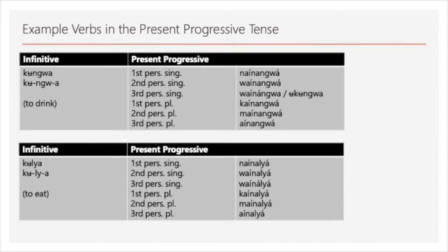What these forms share with the infinitive is the 'n' vowel that is always there, so maybe this could be the stem, but we would need to examine it further. Another interesting thing is that Nico gave me two options for the third person singular of 'kungwa': 'wainanwa' and 'ukungwa'. During my research I found out that the second and third person singular either begins with a 'w' or a 'u', and the 'u' can also be an 'o' — I'm not completely sure because the sounds are so similar.